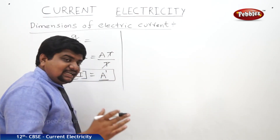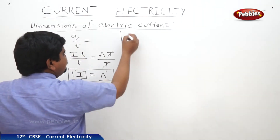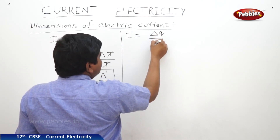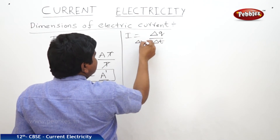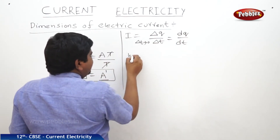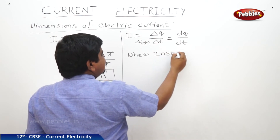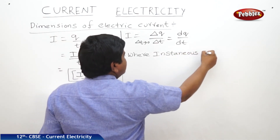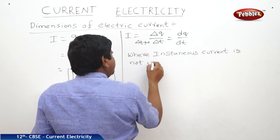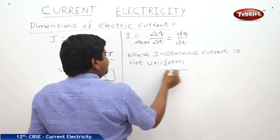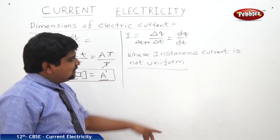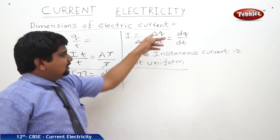If the instantaneous current is not uniform, then the expression will be I = ΔQ / ΔT. When ΔT tends to zero, the expression becomes dQ/dt. This applies when the current or charges passing per unit time are varying inside the conductor — in this case, we differentiate with respect to time as ΔT tends to zero.